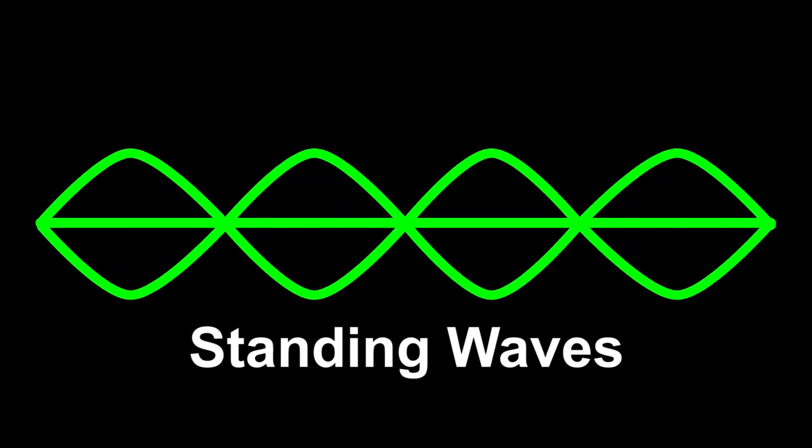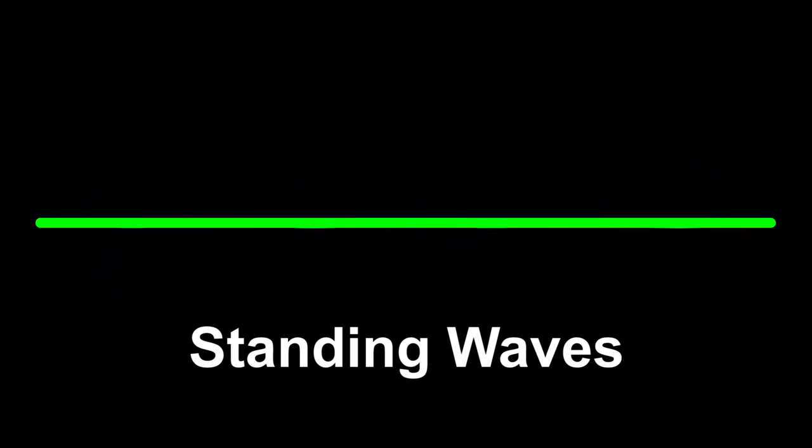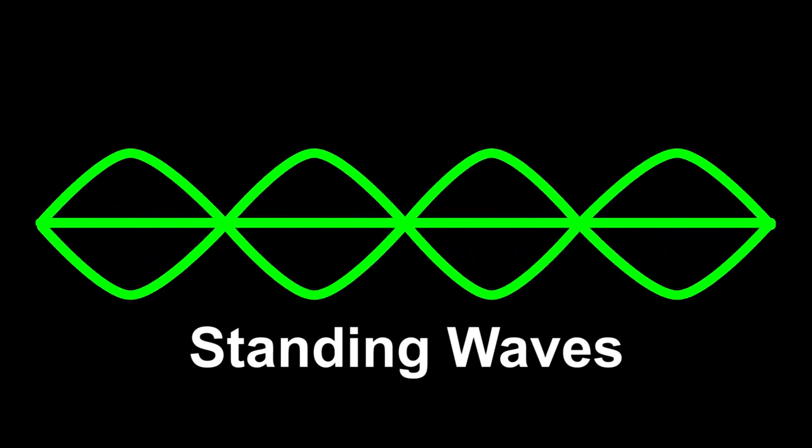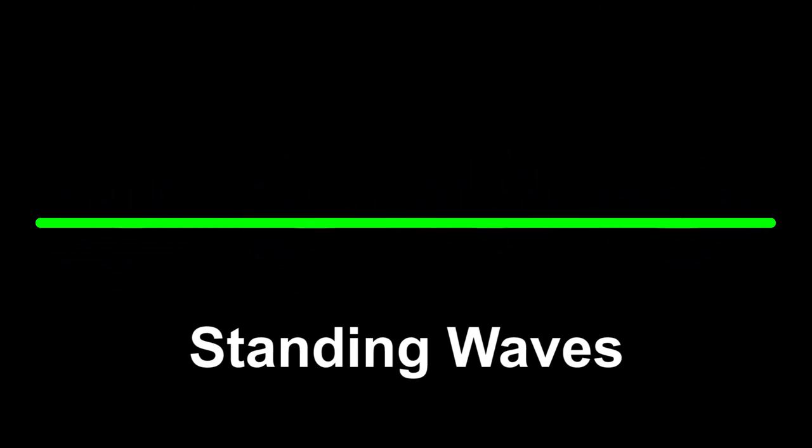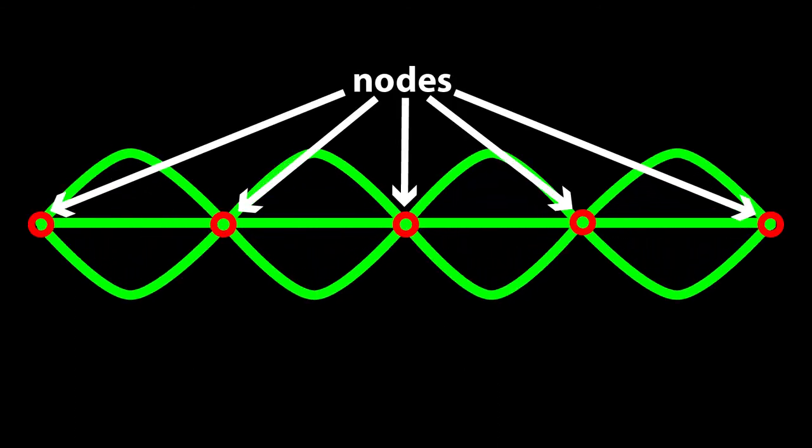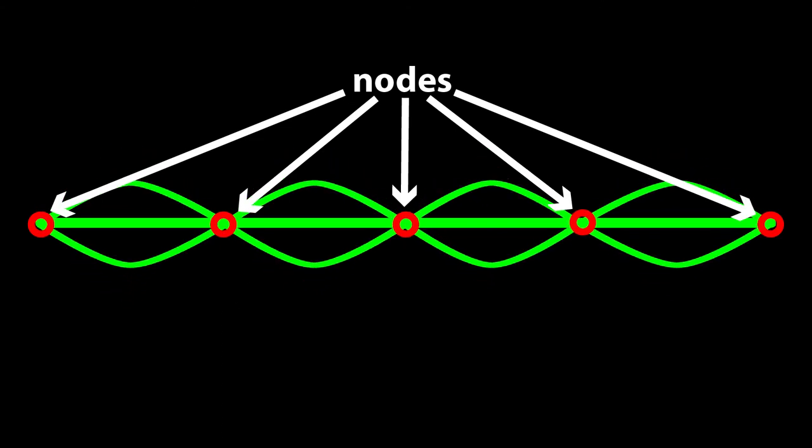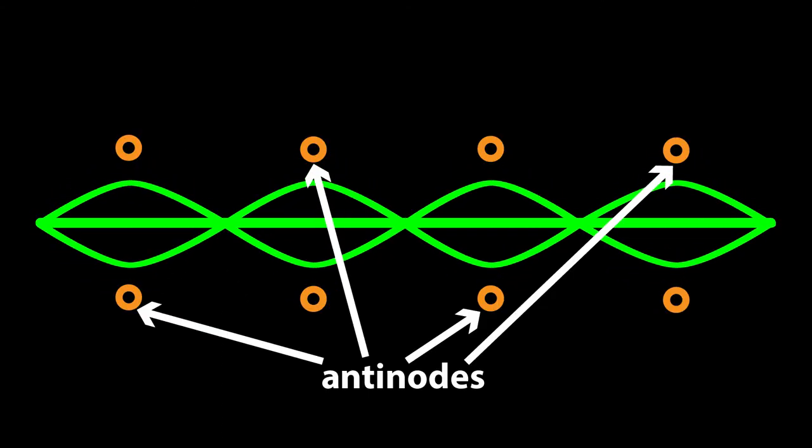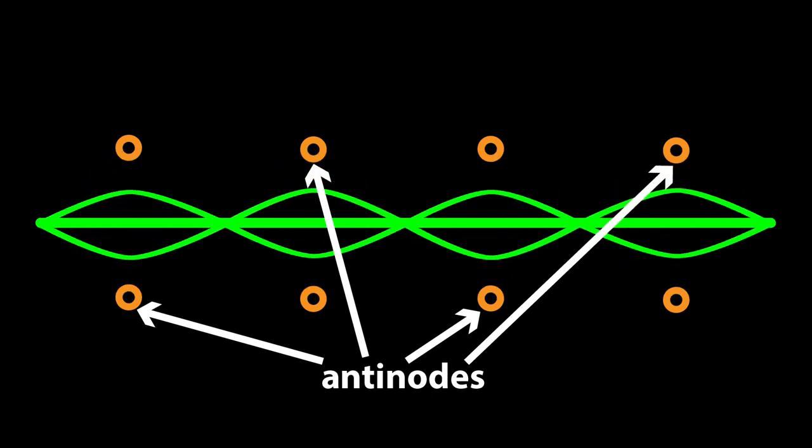If we keep running these waves into each other over and over again, we get a pattern called a standing wave. In the standing wave, we have continuous constructive and destructive interference, and it ends up giving us some unique positions in the wave. We have a spot in the wave where the wave doesn't actually move any, a spot where there's no amplitude. These are called nodes. We also have spots in the wave where its amplitude is its greatest. These are called the anti-nodes.